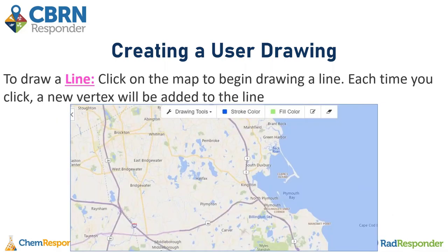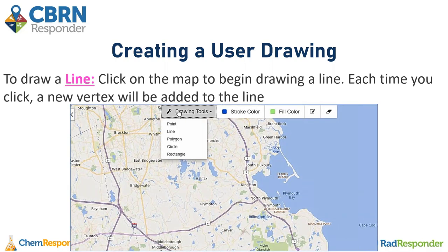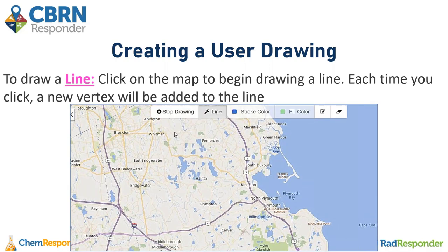The next drawing tool is a line, which can be useful to tell the distance between certain points or cities. For example, if I wanted to see the distance between the cities of Bridgewater, Halifax, and Pembroke, I select the line tool. Every time you click on the map, a vertex will drop and create that line.